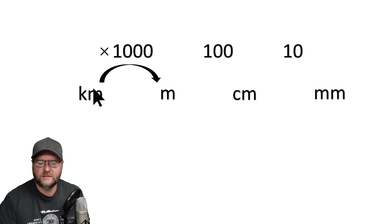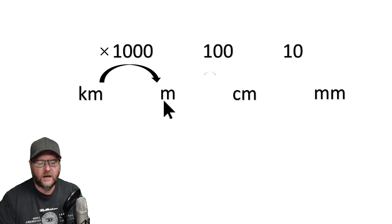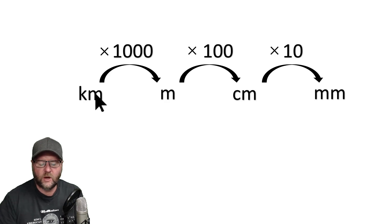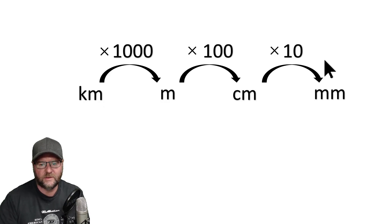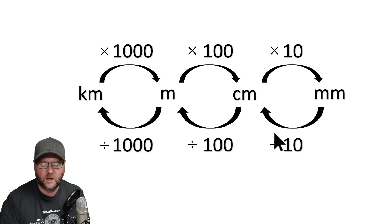One kilometer times a thousand gives me meters. So one times a thousand would be a thousand meters. I could do the same for centimeters and the same for millimeters. Going from a larger to a smaller unit, I'm going to multiply by this number. Going the other way, I divide. We'll look at some examples in a moment.